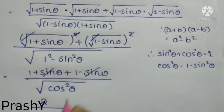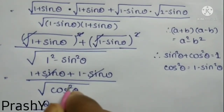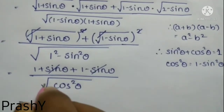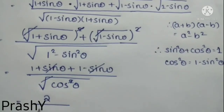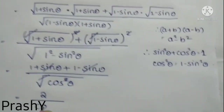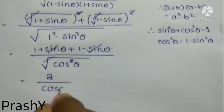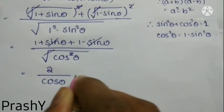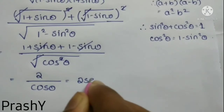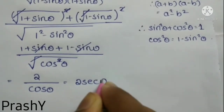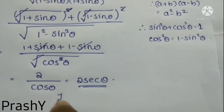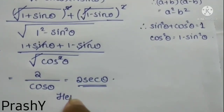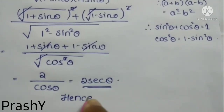So we get 2 by cos² θ, and the root and square cancel, leaving cos θ in the denominator. Therefore 2 divided by cos θ is equal to 2 secant θ. Hence proved.